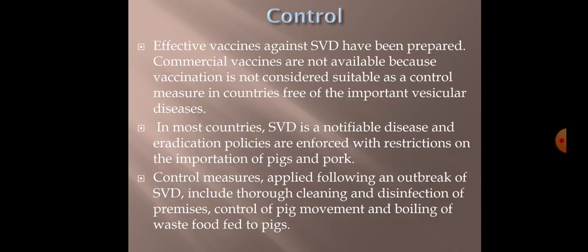In summary, we have discussed two main members of Picornaviridae: Aphthovirus, which causes FMD — a highly significant disease from a veterinary point of view — and Enterovirus, which causes swine vesicular disease, a disease occurring in pigs that is clinically almost similar to FMD but can be differentiated using appropriate lab tests. Control measures are almost similar for both diseases. With this, our discussion of the Picornaviridae family is complete; next week we will take up another important family of viruses.